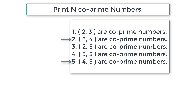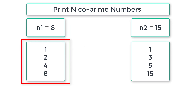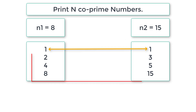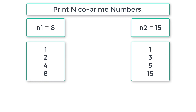Their relationship is called co-prime or relative prime. For example, if num1 is 8 and num2 is 15, we find the factors of 8 and 15. The only common factor is 1, so 8 and 15 are co-prime numbers. By definition, two numbers are said to be co-prime or relatively prime if they do not have any common factors other than 1.